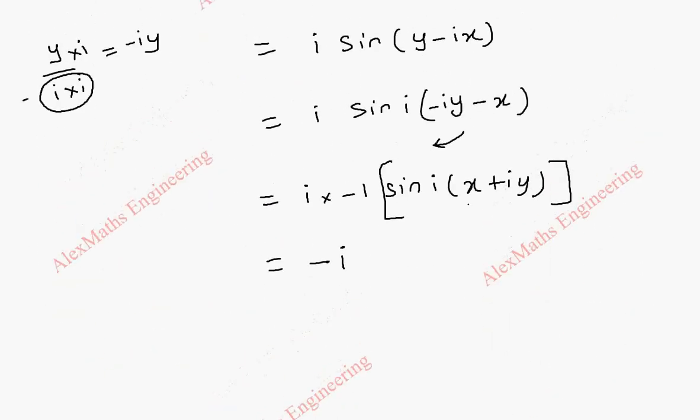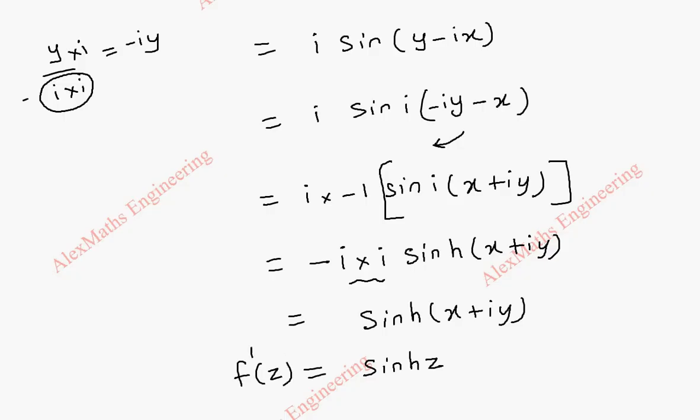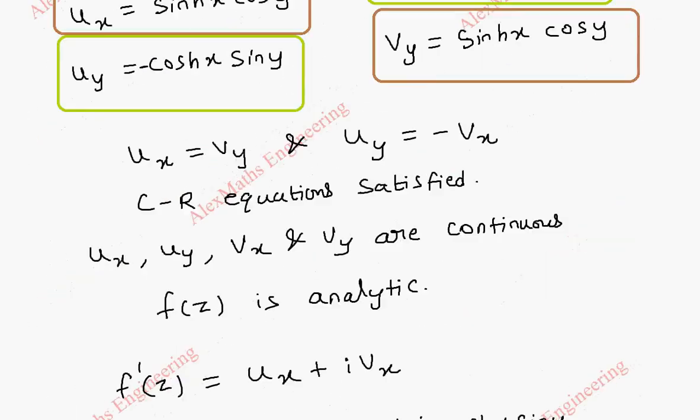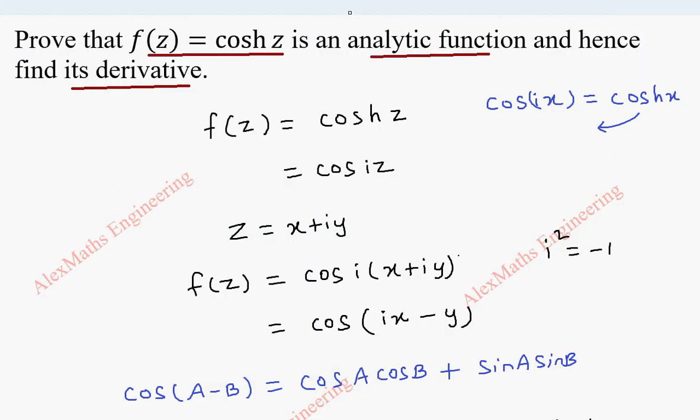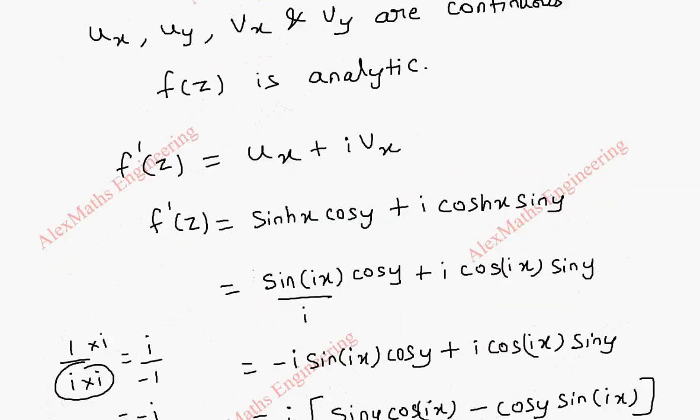So, this entire term can be written as into i sinh of x plus iy. And this is i squared minus 1, already there is a minus plus 1. So, sinh of x plus iy. And we replace that with z. Thus, as per the question, we proved it is analytic and also we found its derivative.